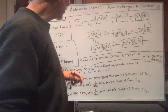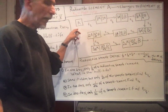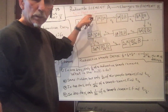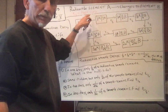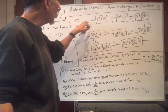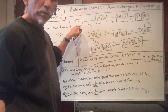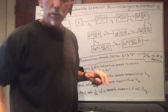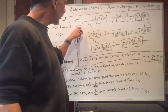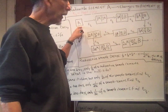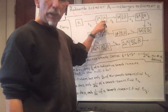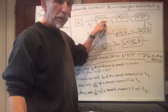Let's look at this. We're starting off with all A. T-one-half is what I'm calling the half-life. After one half-life, our sample — whether it's one pound, 10 kilos, or half a microgram — is half A and half B.